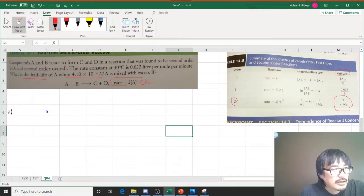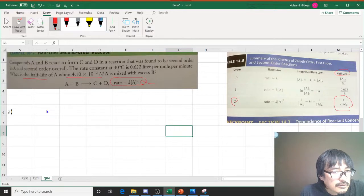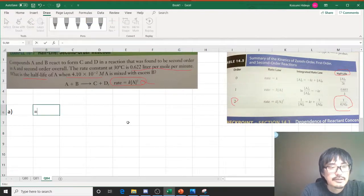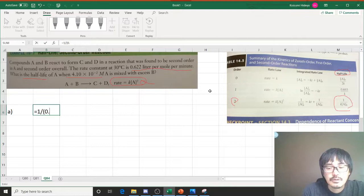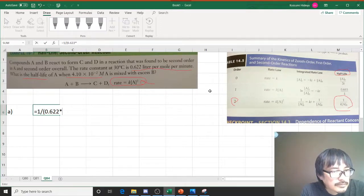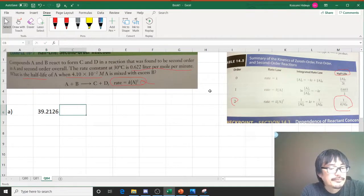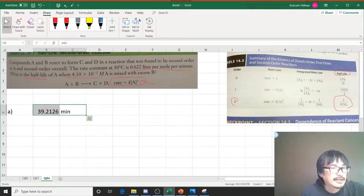A rate constant is given, so it's right here. Okay, so this is going to be easy. So half-life is equal to 1 divided by k times the concentration. k is 0.622, the concentration is 4.1e to the negative 2. That's too easy.